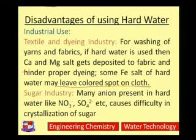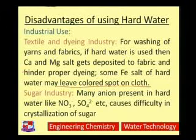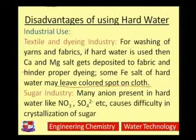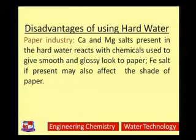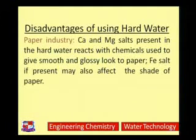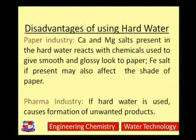In the sugar industry, if hard water is used, the anions present — such as nitrate or sulfate anions — cause difficulty in crystallization of sugar, so you will not be able to get crystal-clear sugar. In the paper industry, calcium and magnesium salts in hard water react with chemicals used to give a smooth and glossy look to paper, and iron salts present in hard water may also affect the shade of paper, reducing the quality of the paper.